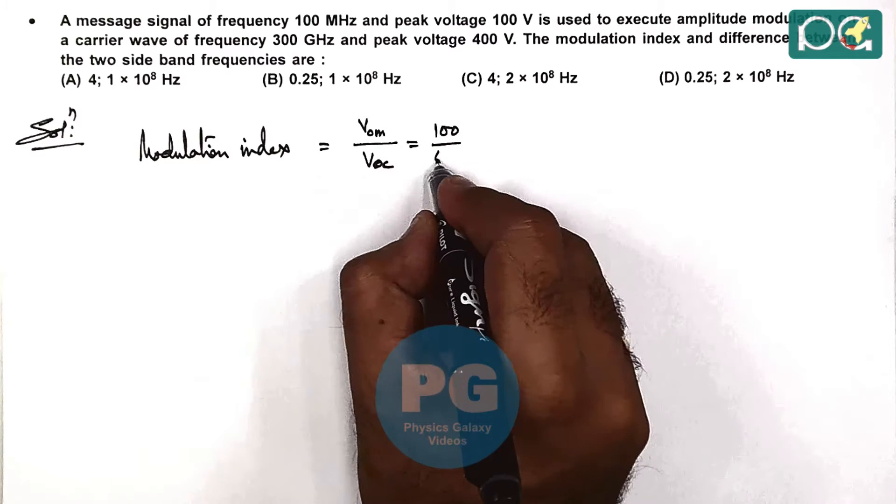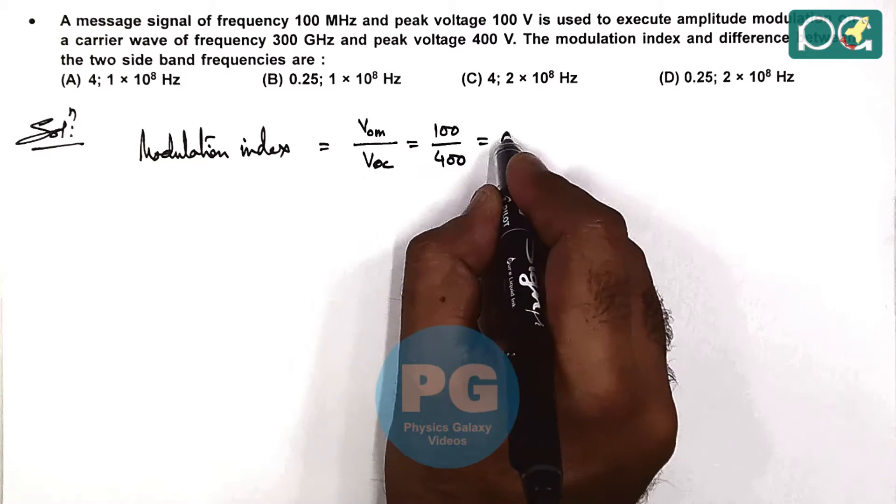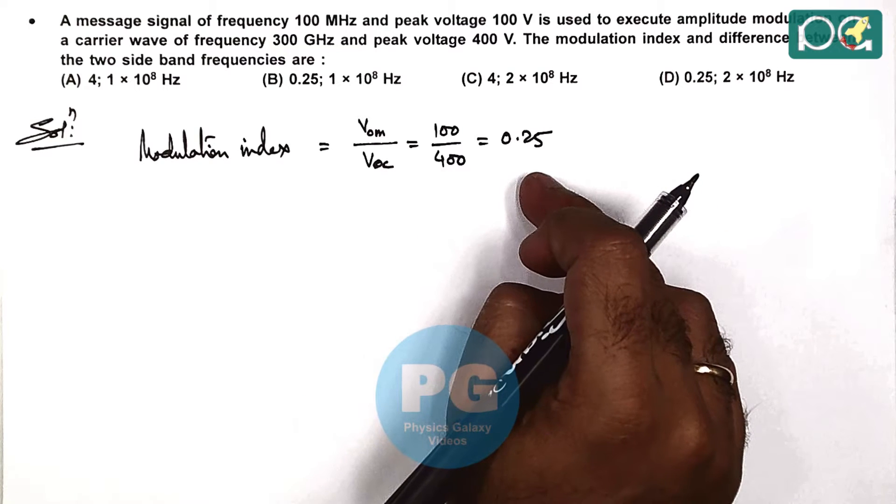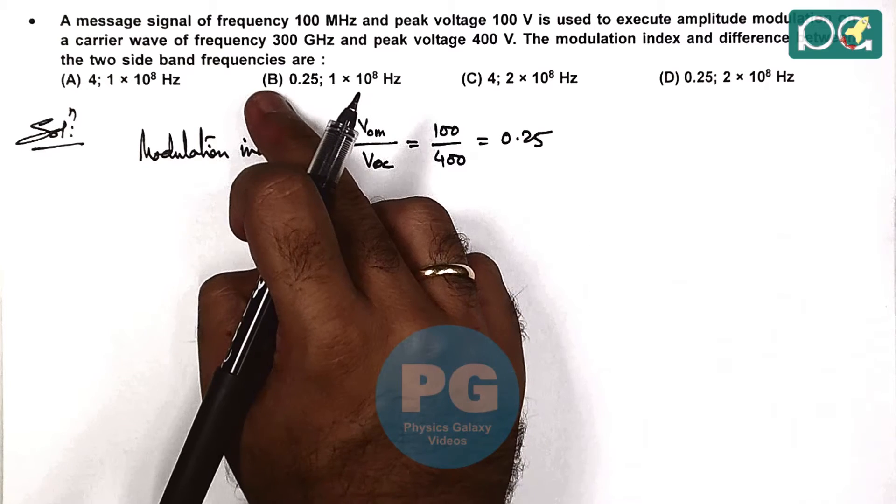So here we can write it as 100 divided by 400, which comes out to be 0.25. So we need to choose options from either B or D because C and A are not matching.